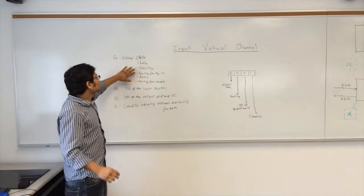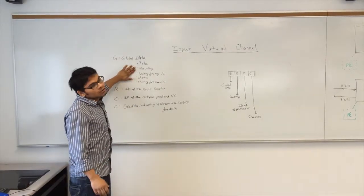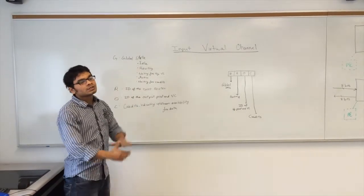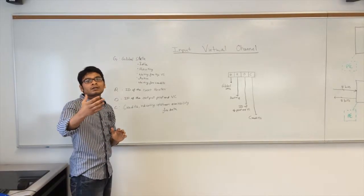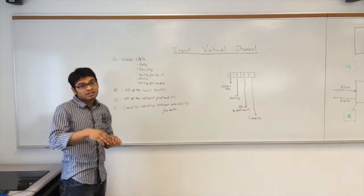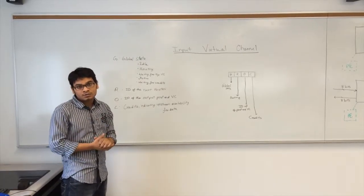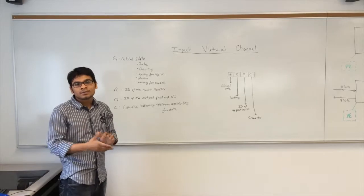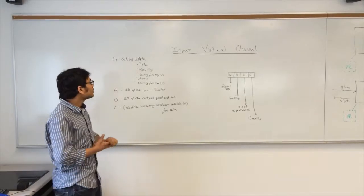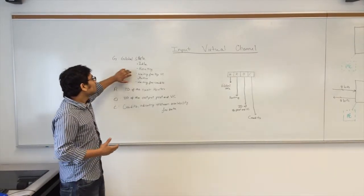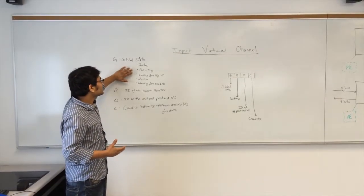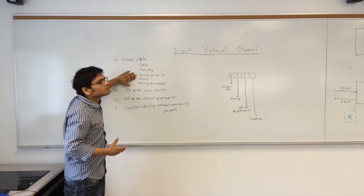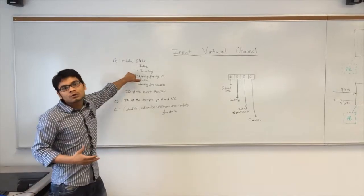When the status of the G field is in routing, the RC unit sends back the ID of the output port — the next router to which the packet needs to be forwarded — and the state of the G field then changes to B, which is waiting for the output port.